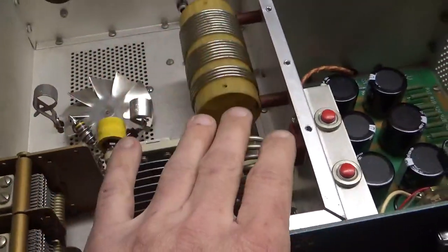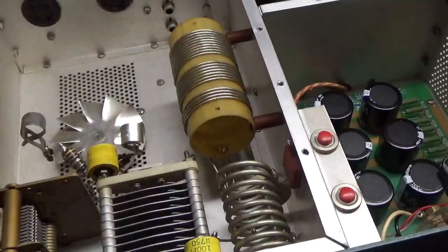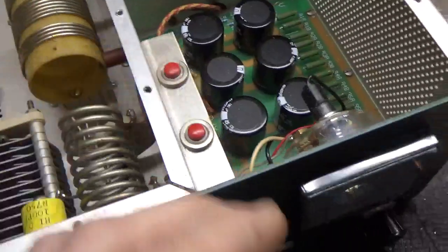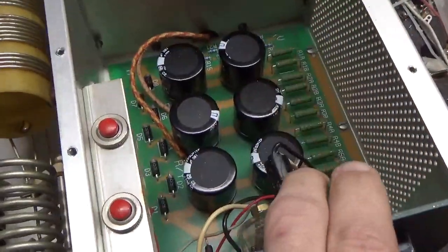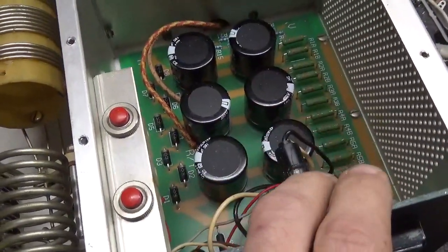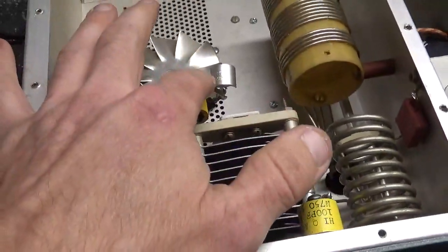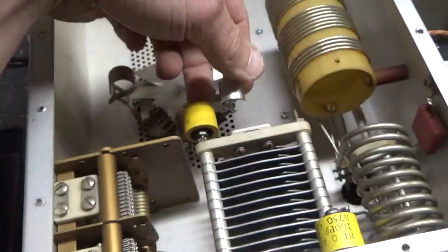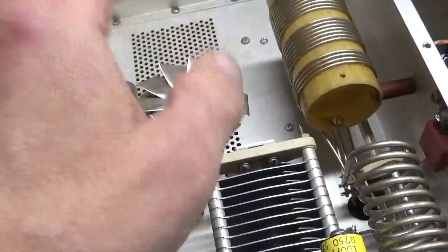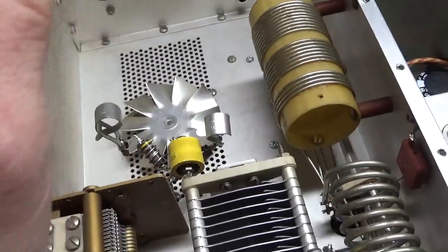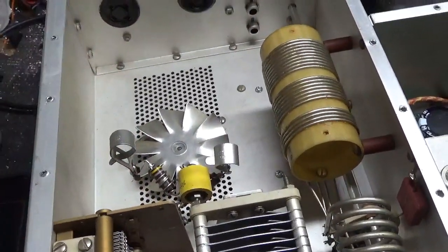So, air variables look good, rotary switch looks good, band switch. I'll change the meter lamp bulb, I'll put meter protection diodes across the meter, change the plate blocker, change the parasitic suppressors. I will compress these a little bit so they have a good connection on the tube anode connection.